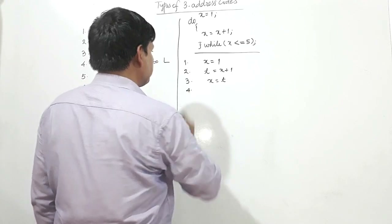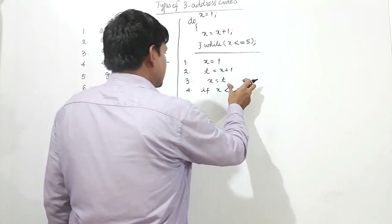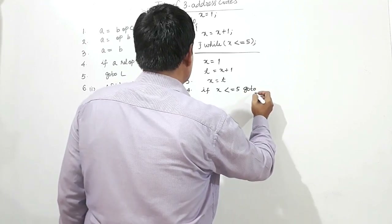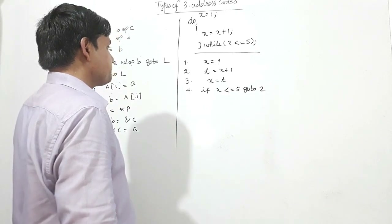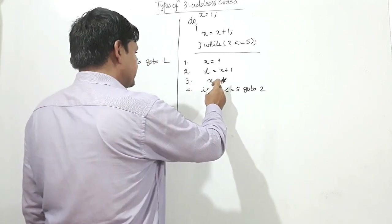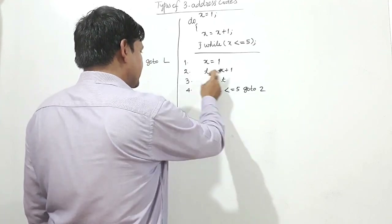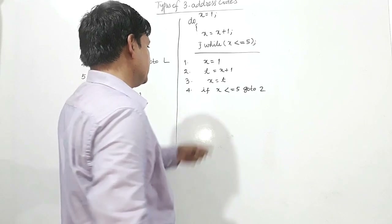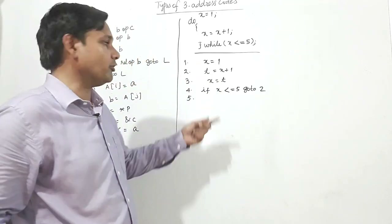Step 4: if X is less than or equal to 5, go to line 2. If X is less than or equal to 5, we loop back to line 2 and X is incremented again. This repeats until X exceeds 5. When X exceeds 5, control does not go back to line 2 and the program ends.